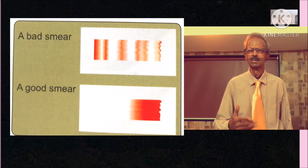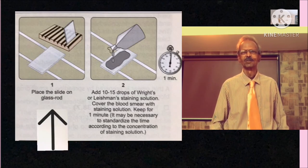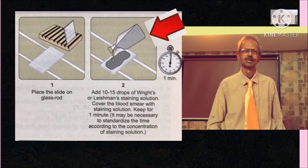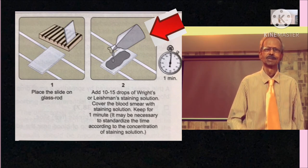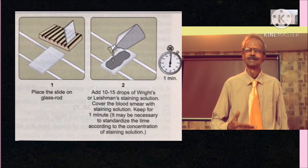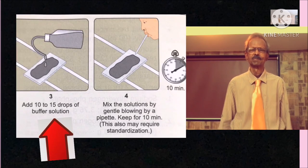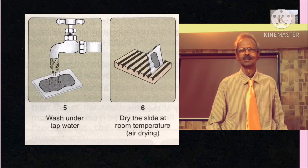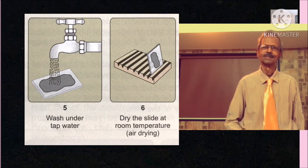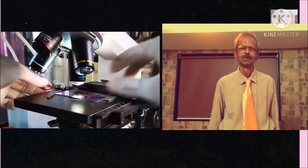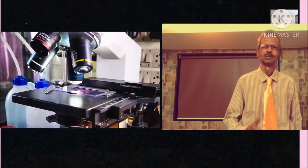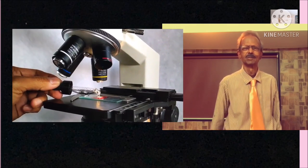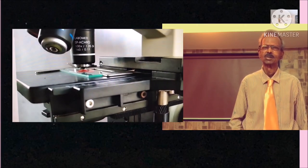Next, dry the blood smear at room temperature and make identification mark on it using a pencil. Next, then place the dried blood smear on the glass rods and cover it with either Wright's staining solution or Leishman solution and keep for about 1 minute. Then add equal number of drops of phosphate buffer and mix by gentle blowing and keep for 10 minutes. Next, wash the stained slide by using tap water and dry the stained blood smear at room temperature.